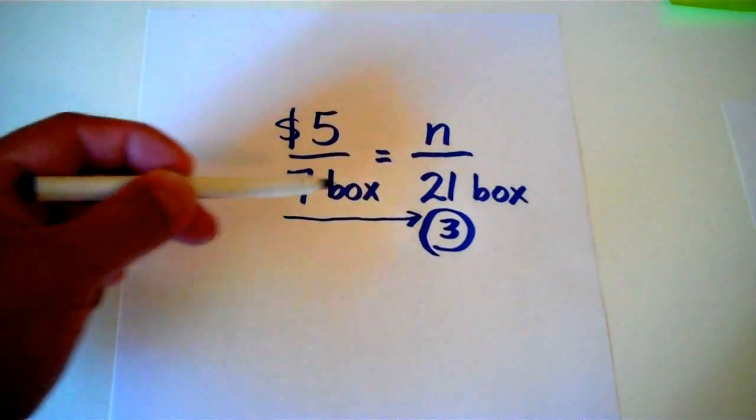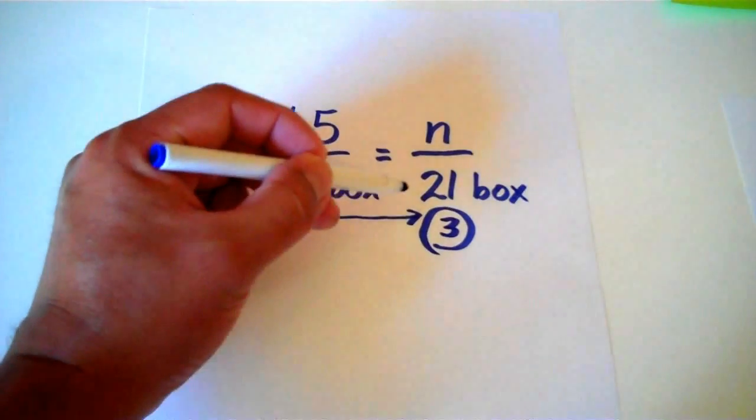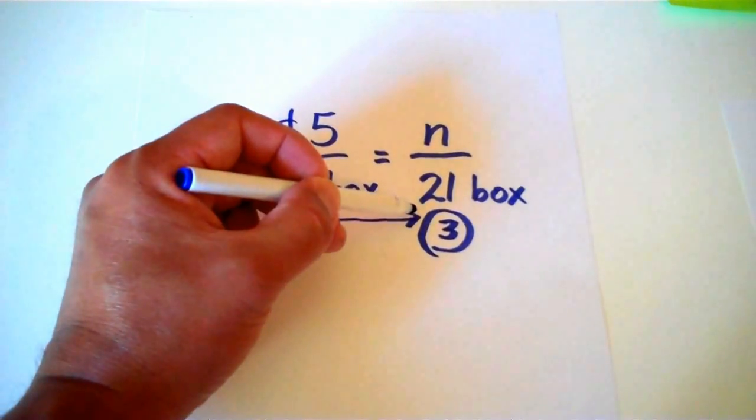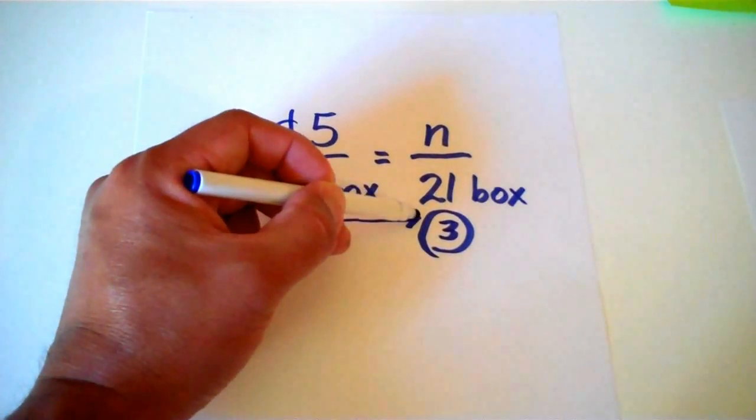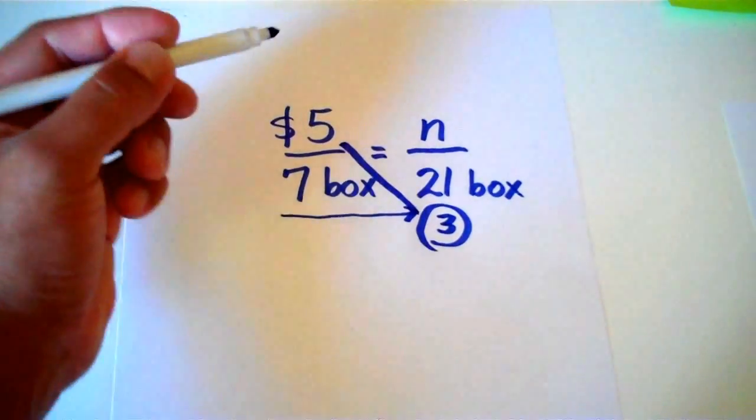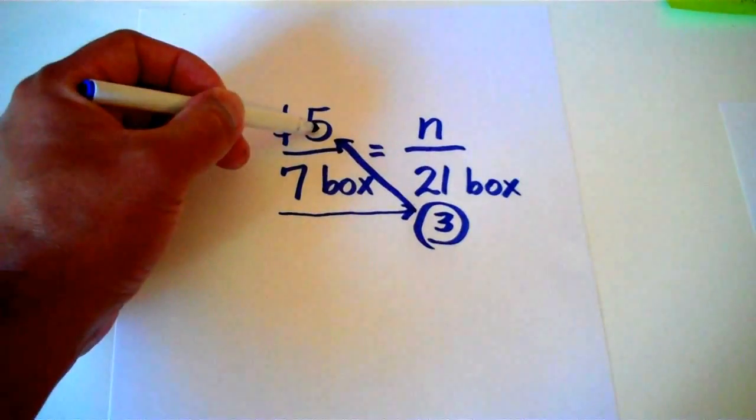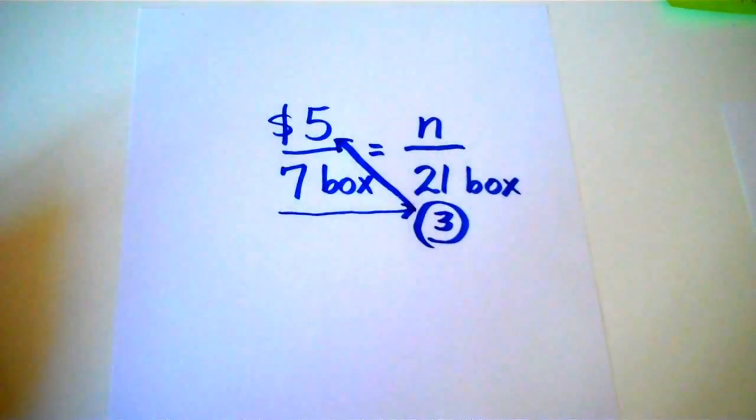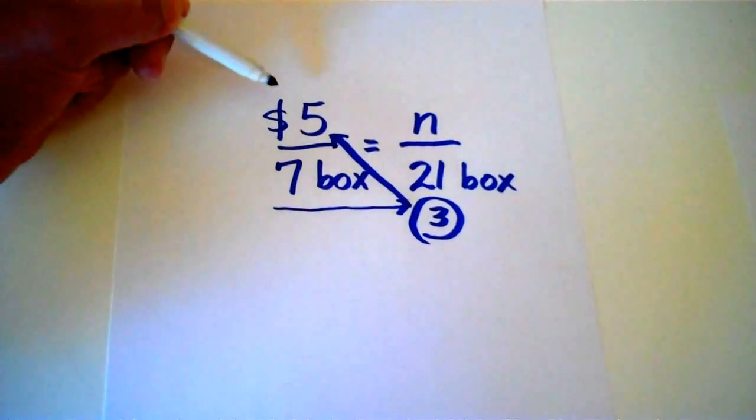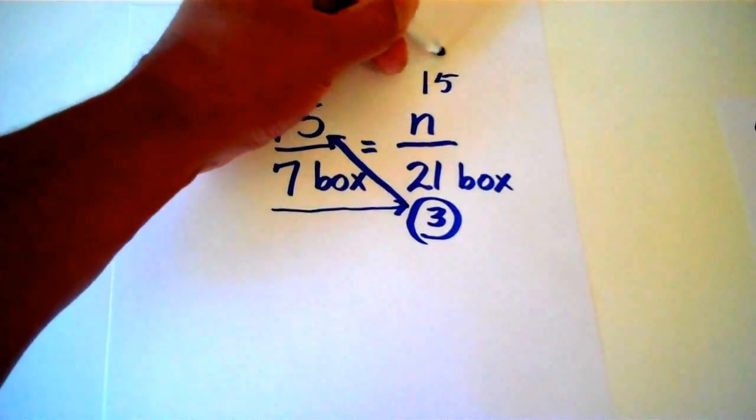So we already divided 7 into 21, which is 3. So now we're going to follow step 2. And that is multiplying the 3, the answer we got from dividing. And notice how this is going to make part of this Z. Well, it looks like a backwards Z. We're going to multiply 3 times 5. And 3 times 5 is 15! Great job!